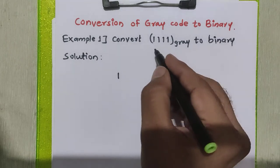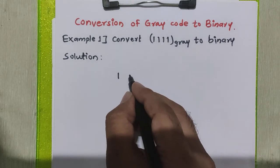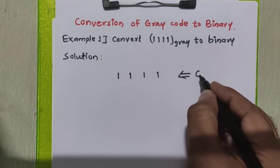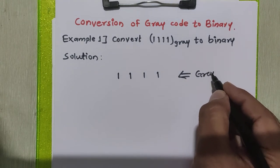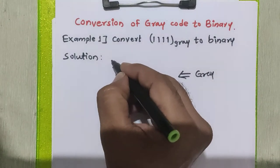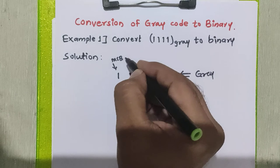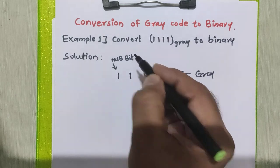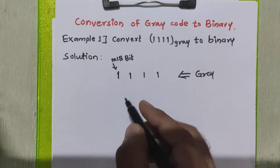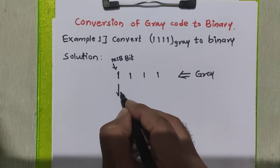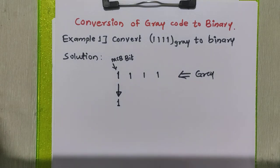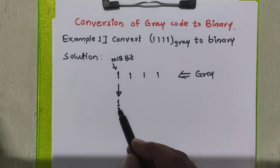I will copy the given grey code as it is. This is the grey code given to us, and this is the MSB, the most significant bit of that number. The first step is to copy the MSB bit as it is into the binary code.